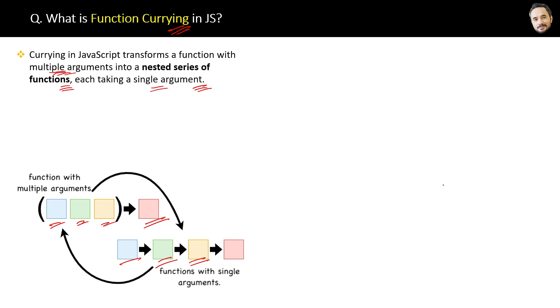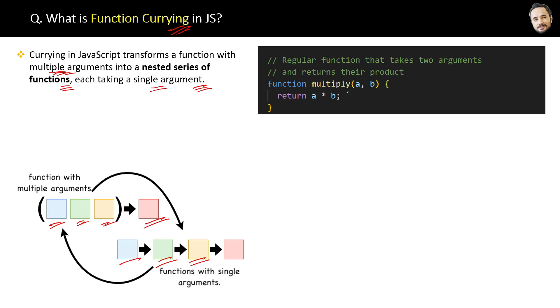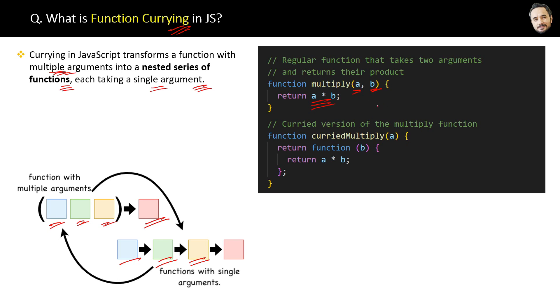Now here you can see the code of a regular function that takes two arguments and returns their product or multiplication. Now here is the curried version of the above multiply function. This is the nested function approach.